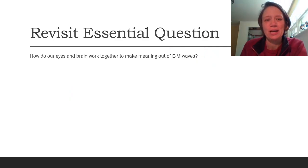All right that's it for the first lecture. Do take a minute and just think about a conclusion or jot down your answer to the essential question which is how do our eyes and brain work together to make meaning out of electromagnetic waves? What are the critical things that we've learned in this lecture and thank you guys for your time.